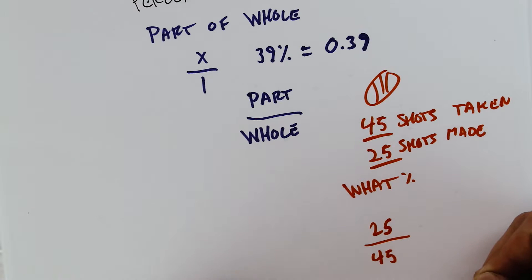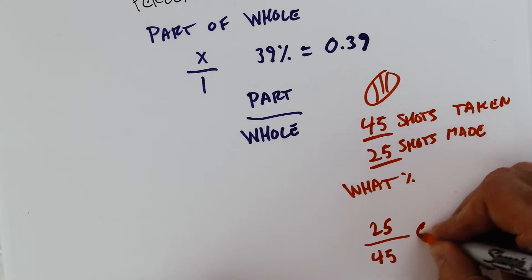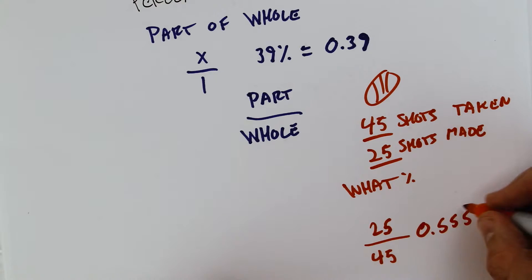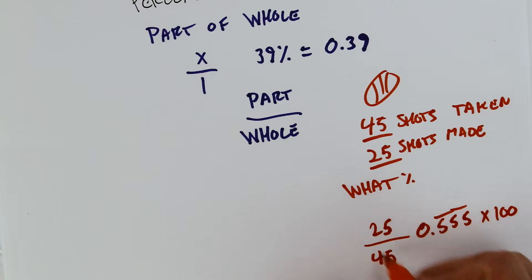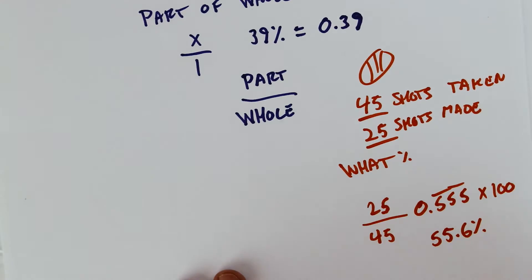25 divided by 45, which gives you 0.555 repeated. So you look at this and it doesn't really look like a percent. That's because we have to times it by 100. So you divide, then you times by 100. So this number is 55.6% approximately after we round. So this is your shot percentage for that basketball game.